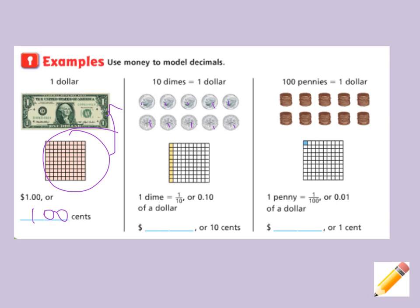So one dime — we circled one tenth of this — which is equal to one tenth, or ten hundredths of a dollar. So it is ten cents.